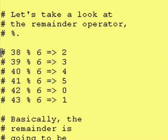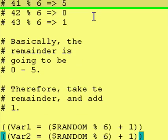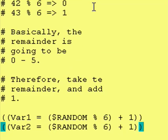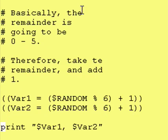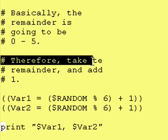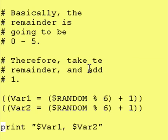What you can see here is that when you divide a number by 6, the remainder is always going to be 0 through 5. So now we have a way to create a random number. All we need to do is take the remainder and add 1 to it. That will get us our 1 to 6 values. Basically, the remainder is going to be 0 to 5. Therefore, take the remainder and add 1.